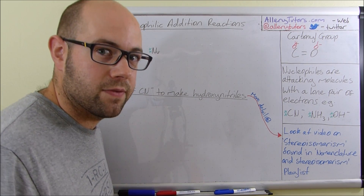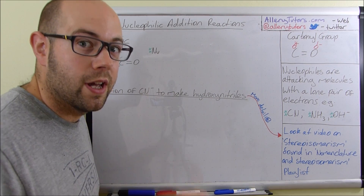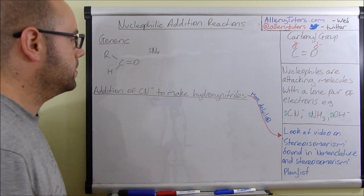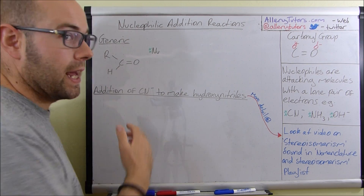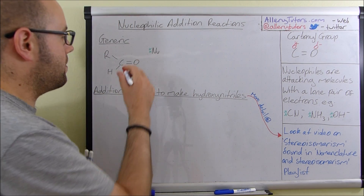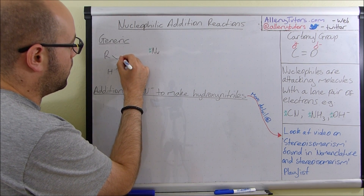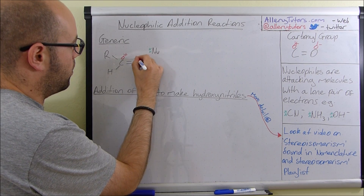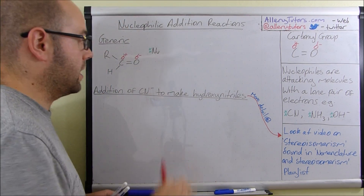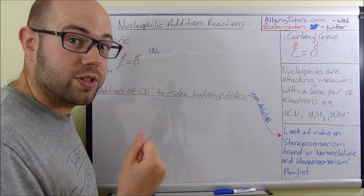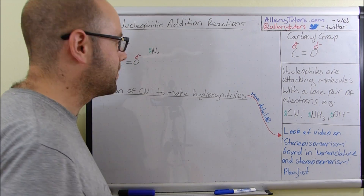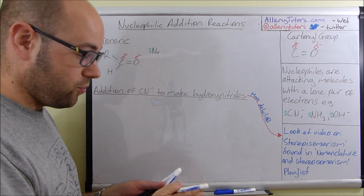Some people think you must have a negative charge for it to be a nucleophile — that's wrong. The deciding factor is it must have a lone pair of electrons. It's good practice to write your polarity on your molecule: your carbon is delta positive and your oxygen is delta negative. This is because oxygen is more electronegative than carbon, so it pulls the electrons towards itself in this covalent bond. Remember that definition.